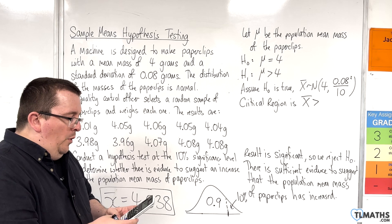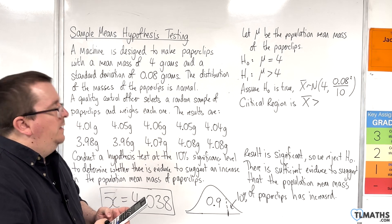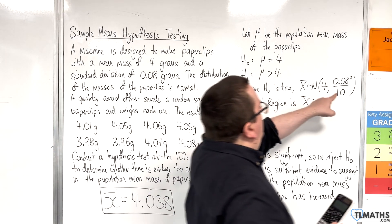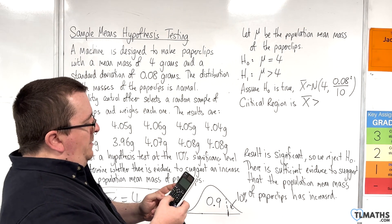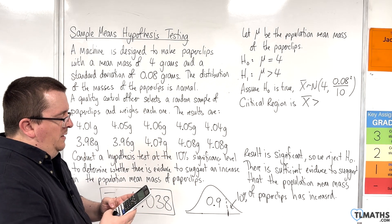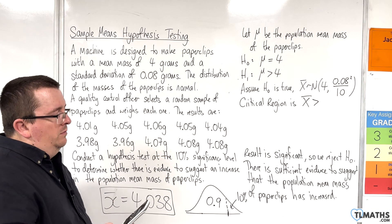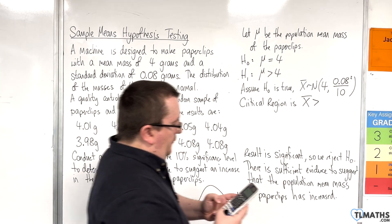So, 0.9, now sigma is the square root of this value here. So, 0.08 divided by the square root of 10. So, it's about 0.0252, and the mean is 4.